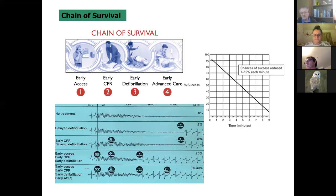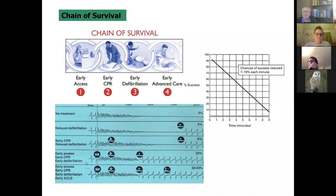You can see the chances of survival down the right-hand column ranging from virtually no chance at all through to a 30 to 40 percent chance with the full chain in place — which is pretty good.